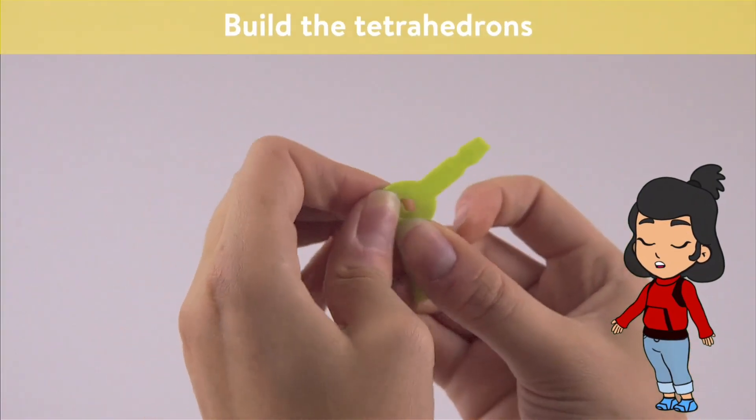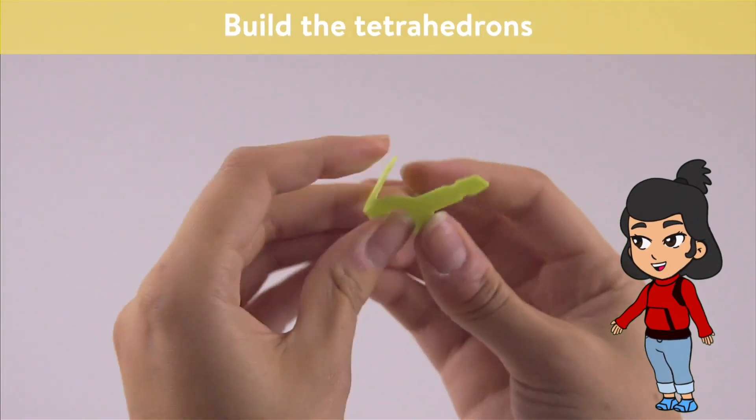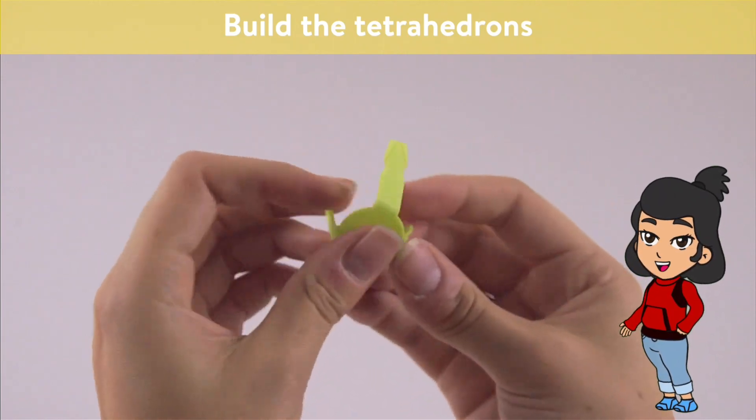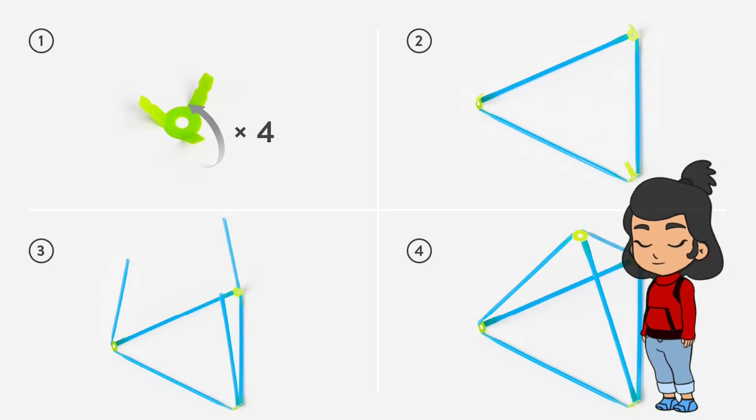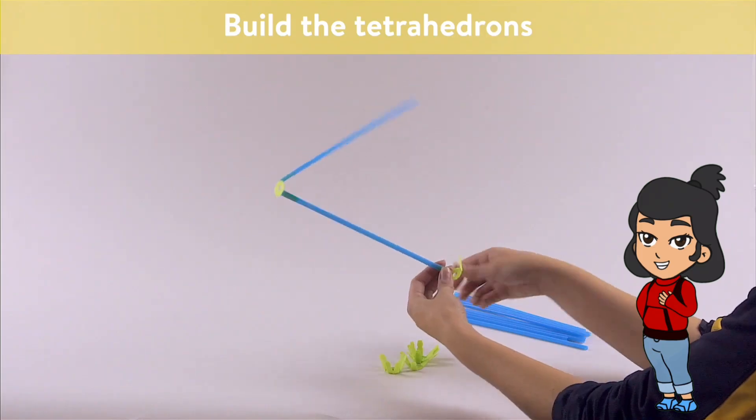Now, let's start building our 3D triangle step by step. Step 1, take one connector and attach two straws to it, forming a 2D triangle.